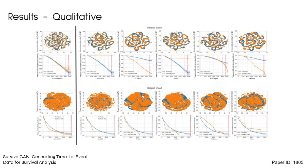Finally, we look at qualitative results. On the left is SurvivalGAN and on the right are the other baselines. At the top, t-SNE plots show the generated covariates match the real data as well as the baselines. On the second row, the Kaplan-Meier plots show that the synthetic survival curve matches the real curve best for SurvivalGAN compared to the baselines.